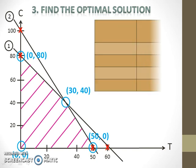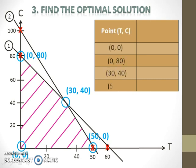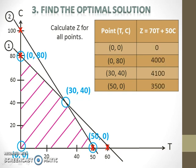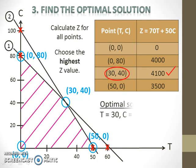Next, build a table with two columns like this and put all the points in the first column. The second column is for the objective function Z. Calculate Z for all points by substituting the T and C values into the objective function equation. Then choose the highest Z value. The point with the highest Z value is the optimal solution.